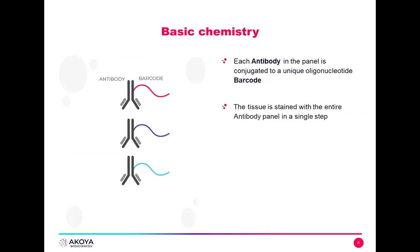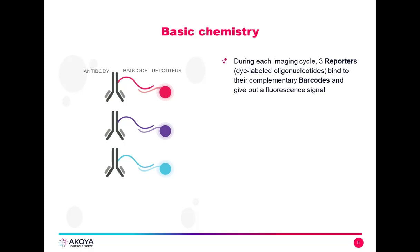The basic chemistry underlying antigen detection using CODEX is this: we have primary antibodies that are DNA barcoded, and these primary antibodies bind their target antigens inside the tissue. We reveal where these antibodies have bound using CODEX reporters — DNA barcodes bound to fluorophores carrying the reverse barcode sequence complementary to the antibody barcode — allowing us to visualize where these antibodies have bound their target antigens inside tissue.